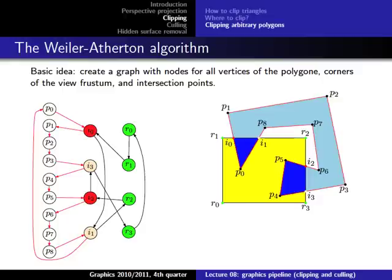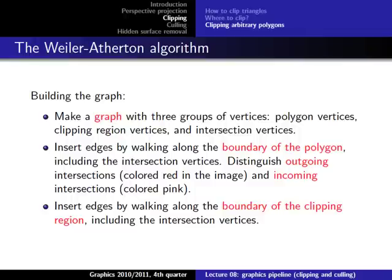This is why we often use the Weiler-Atherton algorithm, which seems a little more complicated but is actually pretty straightforward. The basic idea is that we create a graph containing nodes for all vertices of the polygon, for all corners of the view frustum, and for the intersection points. We then add edges between those nodes that allow us to extract the clipped polygons from this graph very easily.